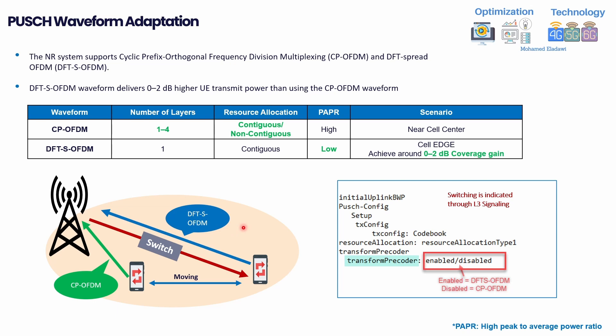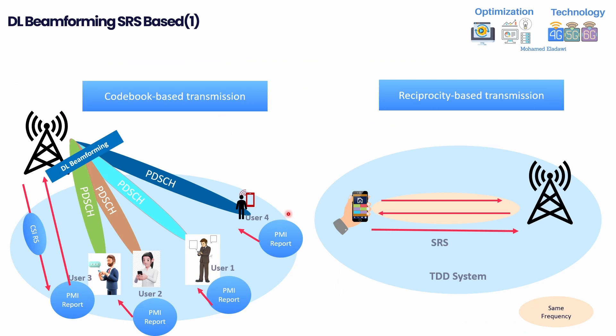Once DFT-s-OFDM is confirmed as enabled, we expect coverage improvement. However, an important point to highlight is that not all devices support this — some UEs have compatibility issues which can cause KPI deterioration. So be very careful when evaluating this feature.